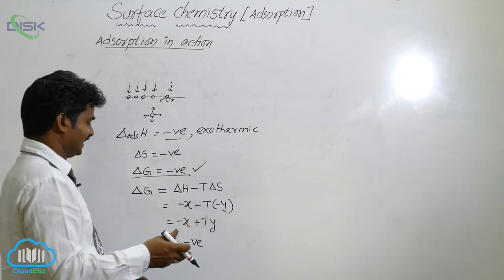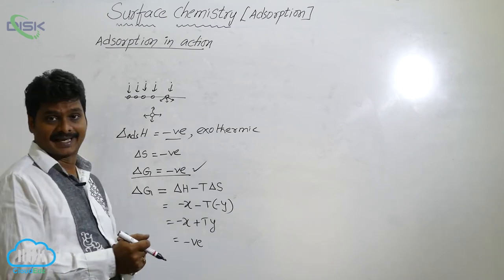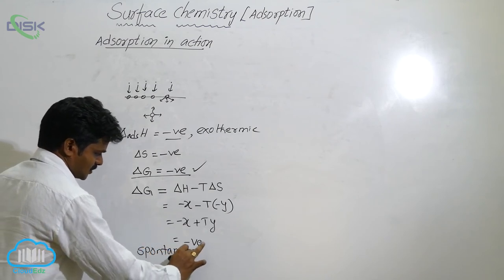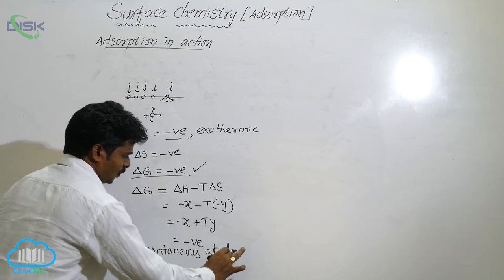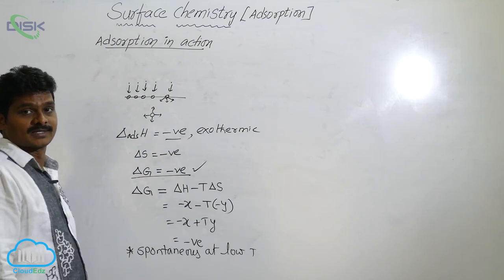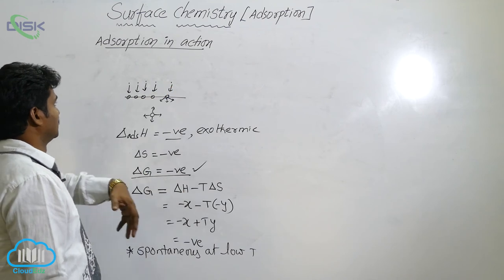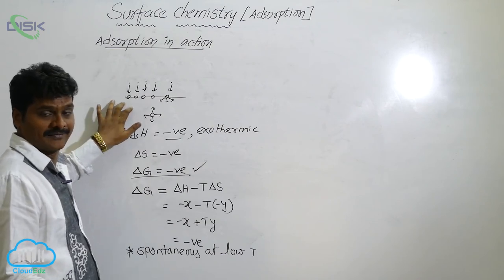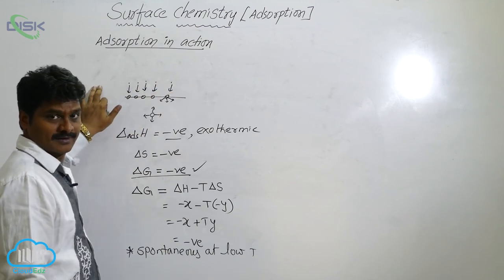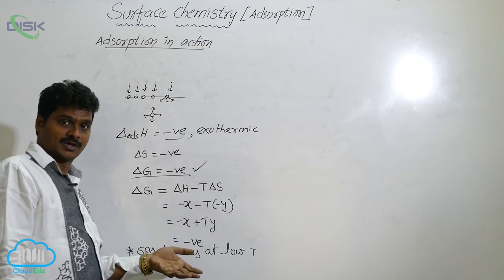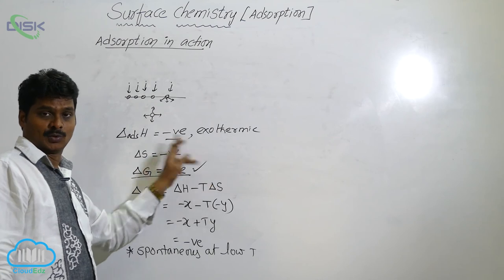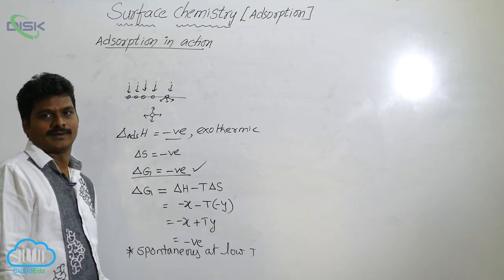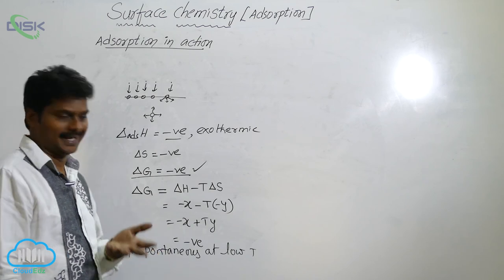So the adsorption process is spontaneous at low temperatures. To summarize: the reason for adsorption is the unbalanced forces of attraction on the surface molecules of the adsorbent. The thermodynamic parameters are delta H negative, delta S negative, and delta G negative. For delta G to be negative, temperature should be low — therefore adsorption is spontaneous at low temperatures.